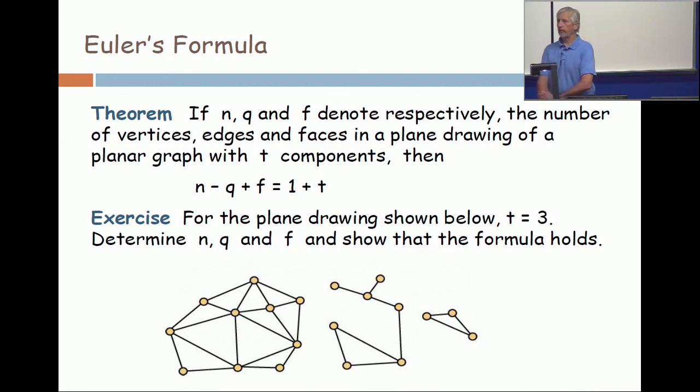So this is Euler's formula: the number of vertices minus the number of edges plus the number of faces is one more than the number of components. Very useful formula, but it starts with something—it's just a statement.